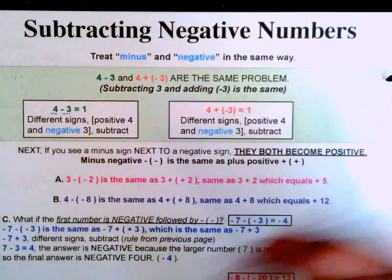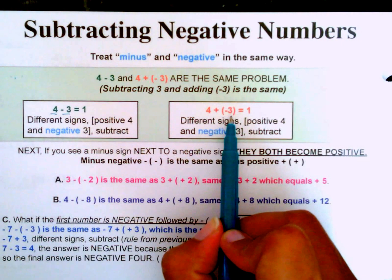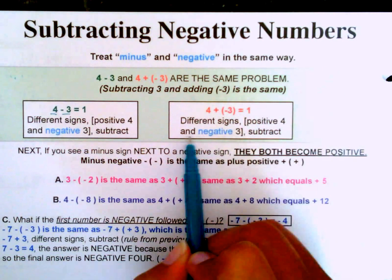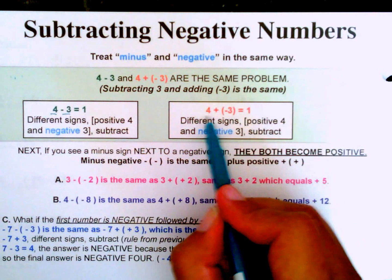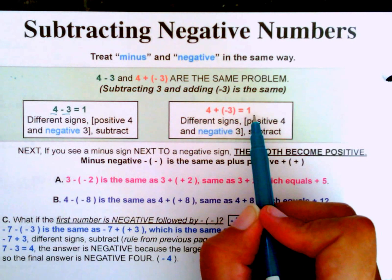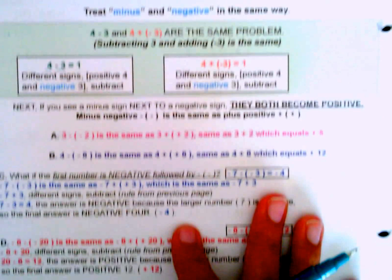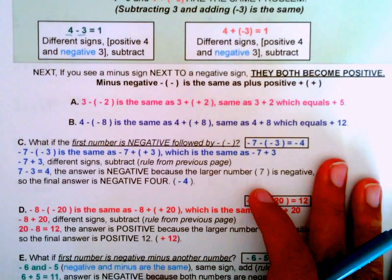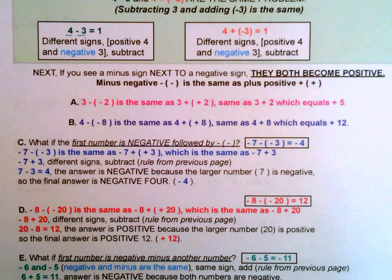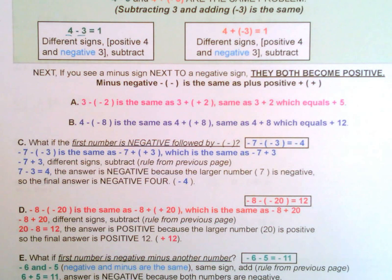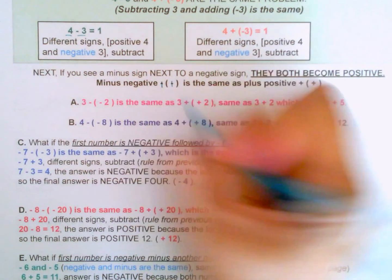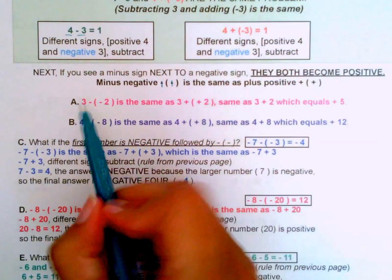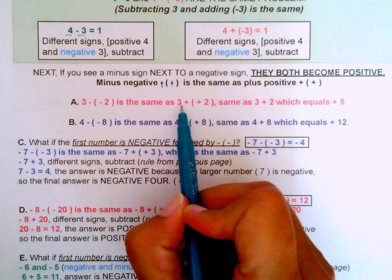The larger number is positive, so the answer is positive. Looking at four plus negative three again — different signs, so we subtract: four minus three is one, and the answer is positive one. So if you see a minus sign next to a negative sign, they both become positive. Sometimes teachers refer to this as the slash and dash method — basically you turn both into positives.